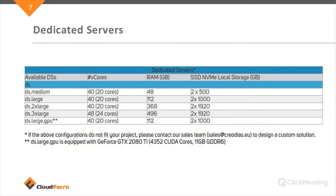Another group are servers called dedicated servers. The difference is that dedicated servers are standalone servers that you do not share with anybody else. You have full access to all vCores and also access to fast NVMe disks, which allows you to use them for very heavy intensive calculations. Special machines include DSLarge with GPU, which can have a GeForce GTX 2080 Ti. On some servers, ArcGIS is pre-installed.